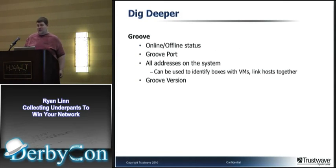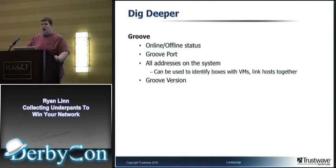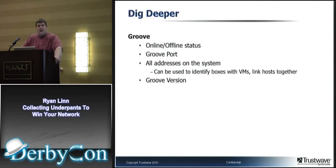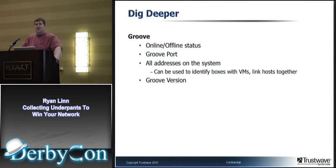Groove is especially nice. Groove is part of the Microsoft Office suite, and it will actually tell you quite a bit about what's going on on the computer. It'll tell you whether or not it itself is online or offline. It'll give you port information, but it'll also give you all the addresses on the system — so if you're running VMware or any other virtualization software, it'll list all of those IP addresses. It'll also help you target hosts that have VPNs set up — so if you're on a network looking for PCI data and you know hosts are VPNing into a PCI network, if they're running Groove you can easily tell which ones are actively VPNed in. It'll also tell you Groove version so you can target specific Microsoft Office exploits.